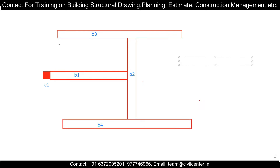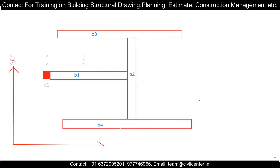To determine end one and end two, we need to know our coordinate system. Drawing the axes here: this is the Y-axis and this is the X-axis, with the origin at (0, 0). If we go from left to right it is positive, and if we go from bottom to top it is also positive. This is the fundamental concept behind determining end one and end two.